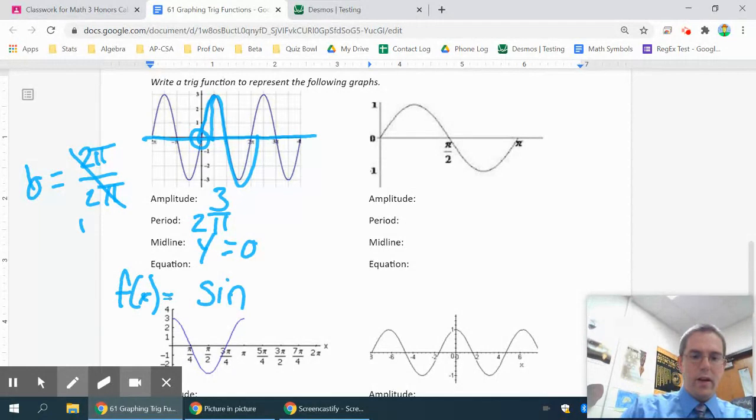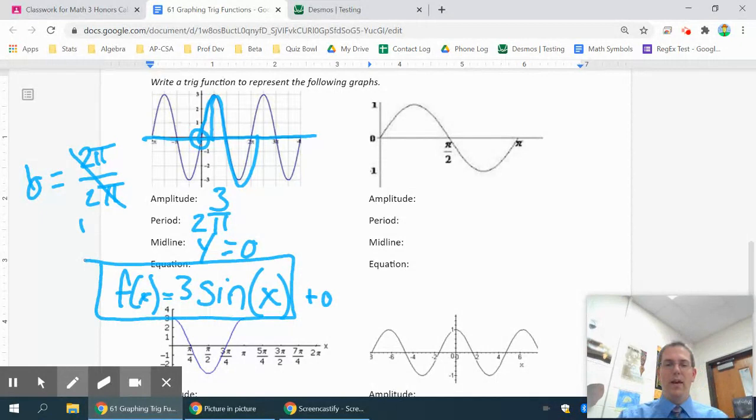So I'm going to have f of x. I leave a little space equals sine. And then since this has an amplitude of 3, that's going to go in front because that's going to stretch it vertically. The b value is 1, so I would have a 1x. And the parenthesis and the 1 are actually optional, but I like writing the parenthesis. And then the midline is plus 0. You could put a plus 0 on the end, or you could just leave it like that, and that would be fine.